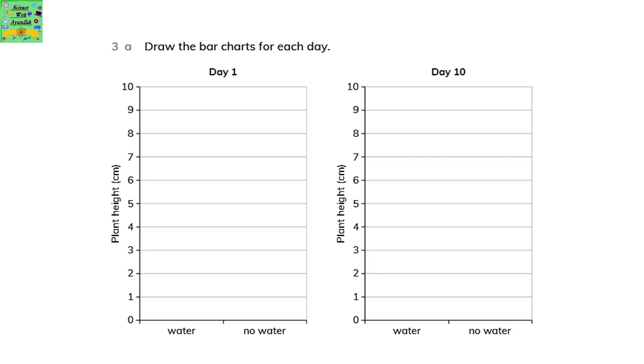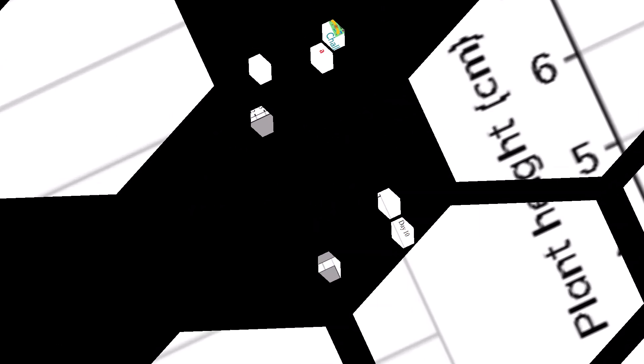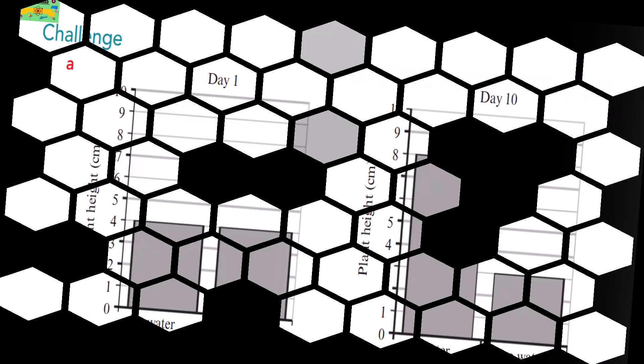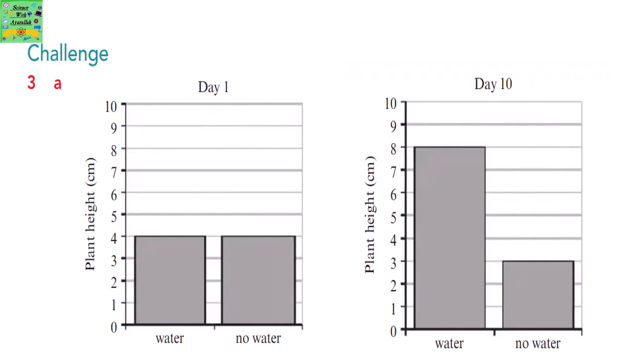Now draw a bar chart for each day. Day 1 the height of both the plants with and without water were the same. On day 10 the height of the plant with water had increased to 8 cm whereas the plant with no water decreased to 3 cm.